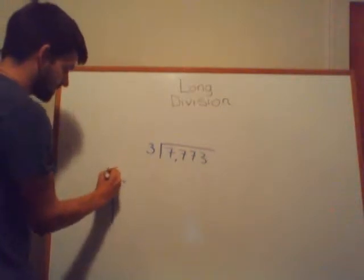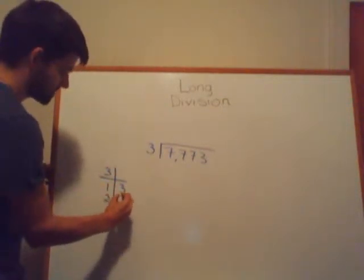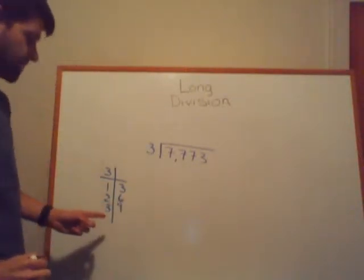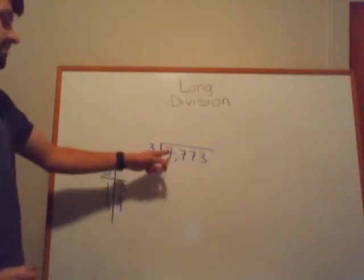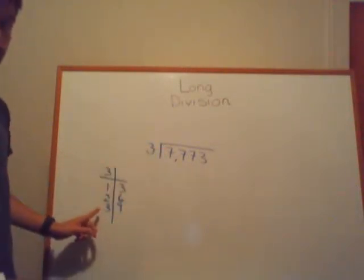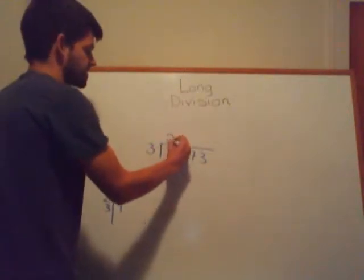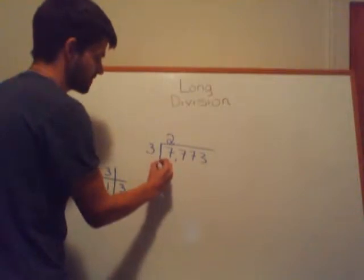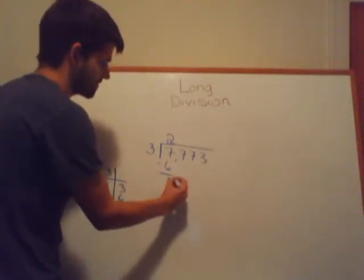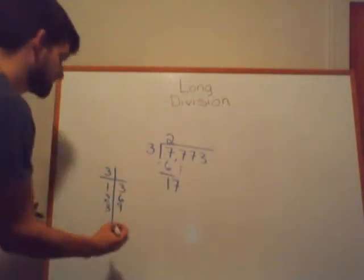Go ahead and write your 3 times tables: 3×1=3, 3×2=6, 3×3=9. I can stop there because 9 is greater than 7, so 3 can't go into 7 three times. But 3 can go into 7 twice because 3×2=6. Subtract: 7 minus 6 is 1. Bring down the 7. Now let's see how many times 3 goes into 17.